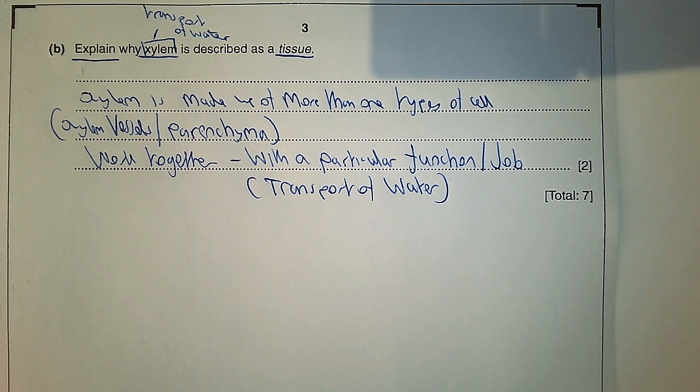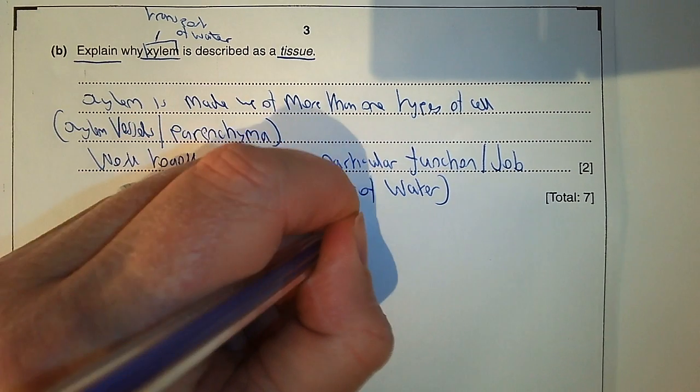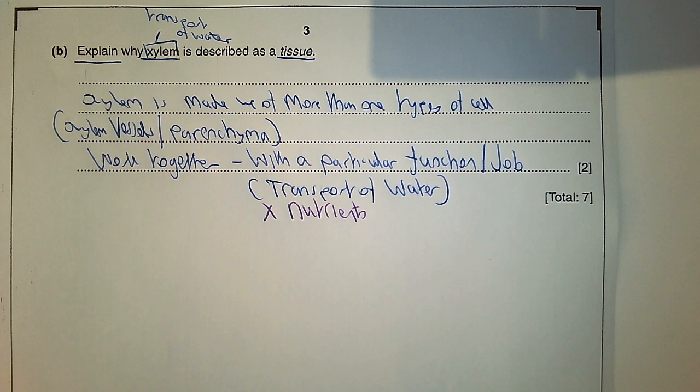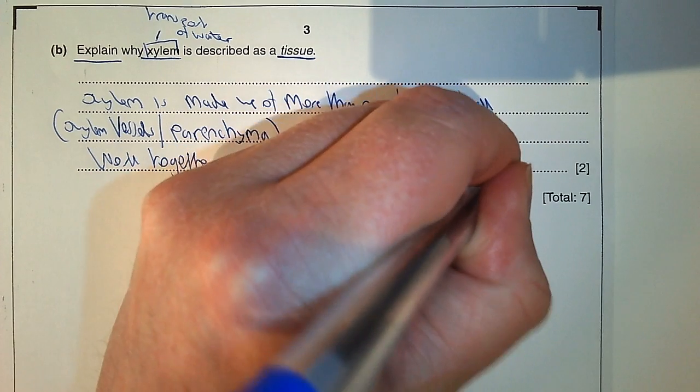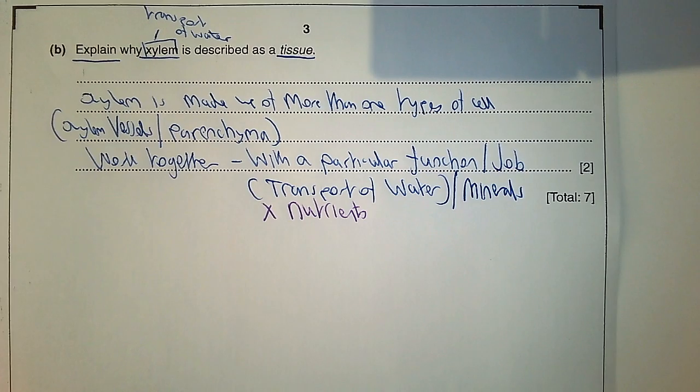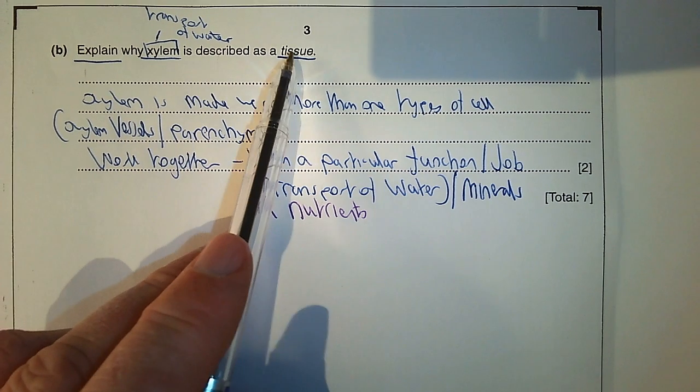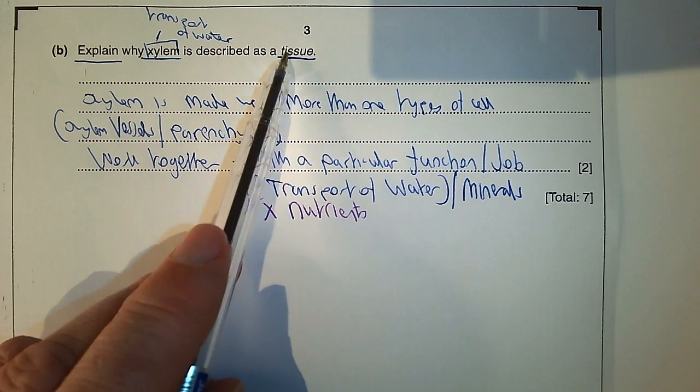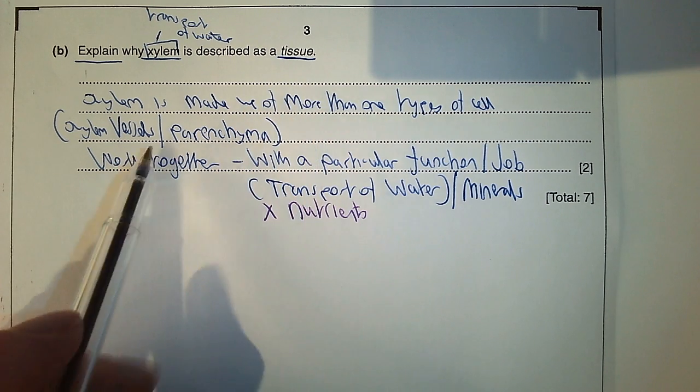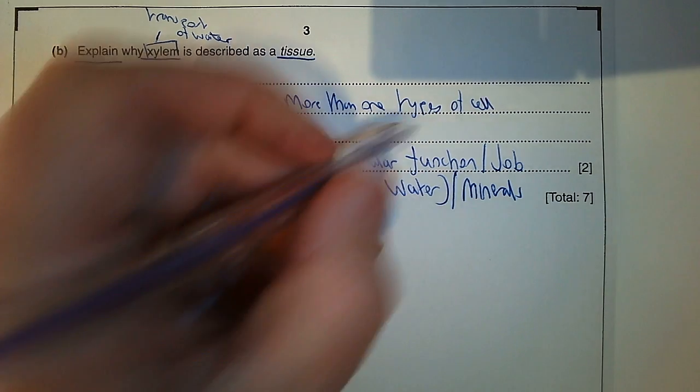You can't say transport of nutrients. You could say transport of minerals, that would be acceptable. So the definition of a tissue is a group that's made up of more than one type of cell that work together with a particular function. It's important that you talk about cell types, not just more than one cell.